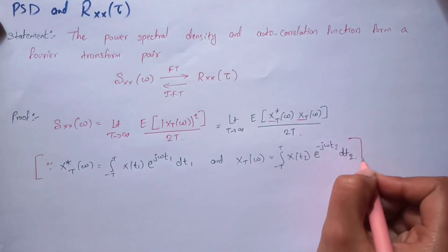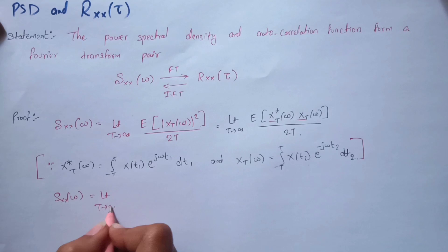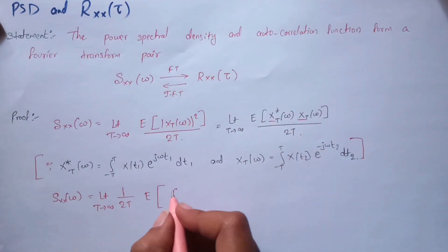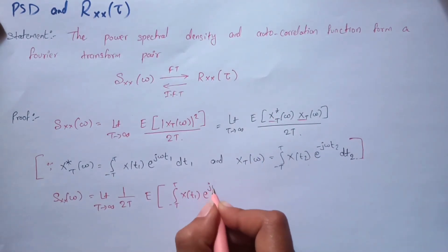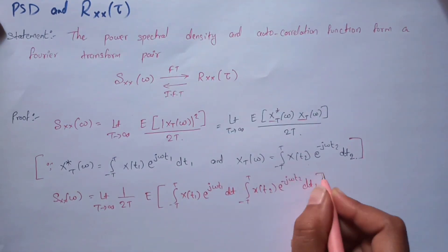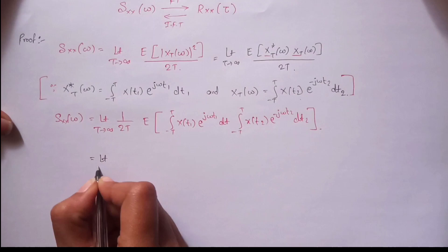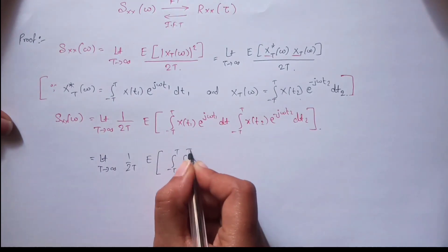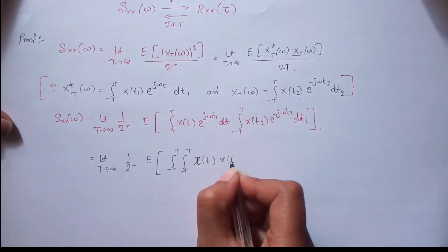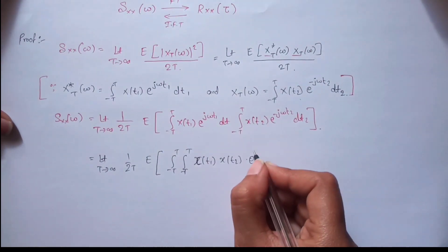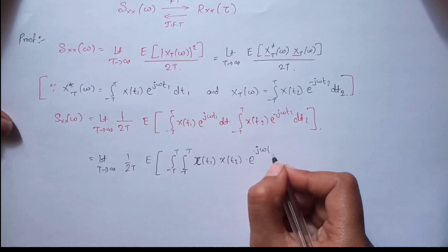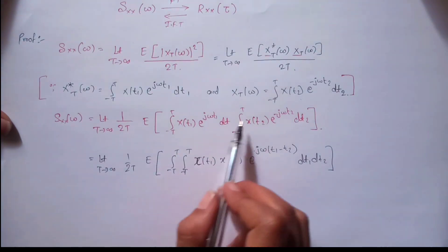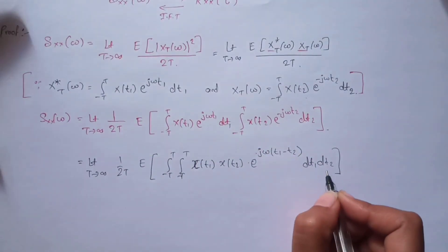We will replace those two terms and write PSD as: the limit as T tends to infinity of 1/(2T) outside, with the expectation of the double integration of x(t1) · x(t2) multiplied together, giving e^(jω(t1 - t2)) dt1 dt2. So we have a double integration in x(t1), x(t2), an exponential, dt1, and dt2.